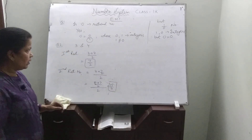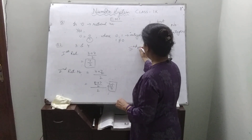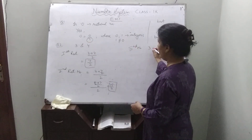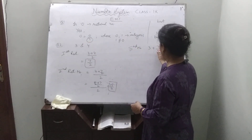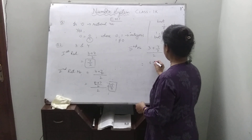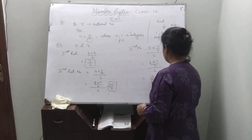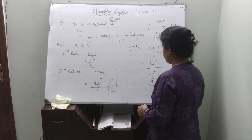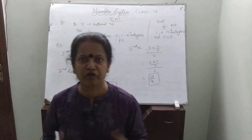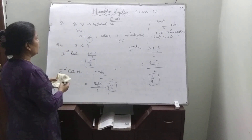Like this, take any 2 pairs together — but remember the pairing should not be repeated, otherwise you will get the same answer. By making pairs this way, you can find out infinite rational numbers between any 2 rational numbers.